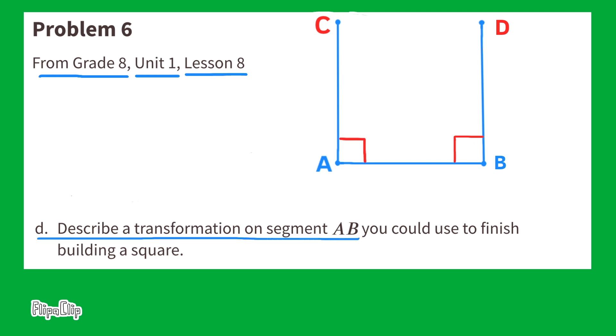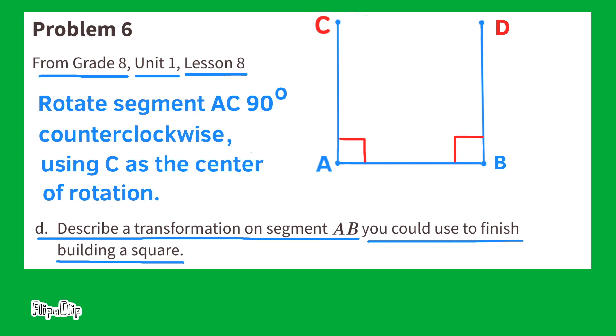D. Describe a transformation on segment AB you could use to finish building a square. Rotate segment AC 90 degrees counterclockwise using C as the center of rotation.